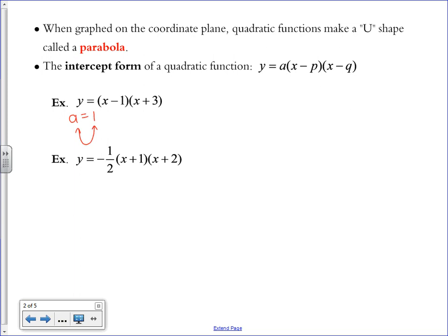The other two things that we're given here, the P and the Q value, are the coordinates of the X intercepts of this graph. Now picture a U on the coordinate plane. It's most likely going to cross the X axis at two places.